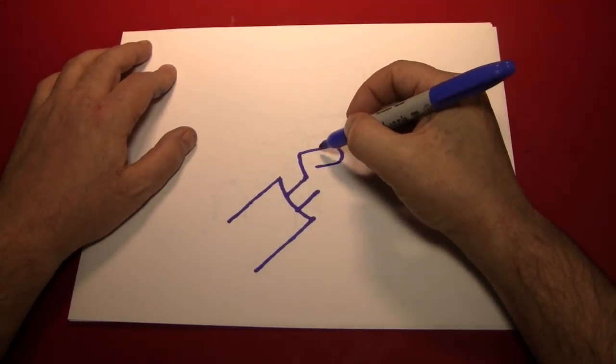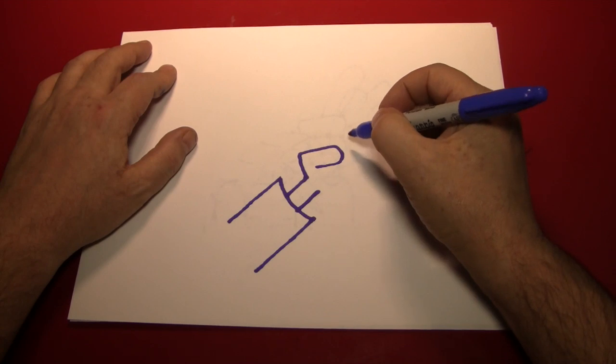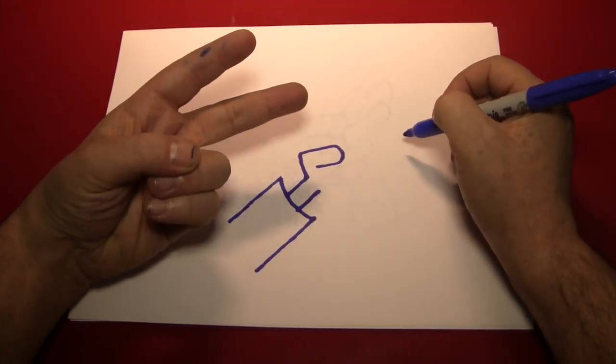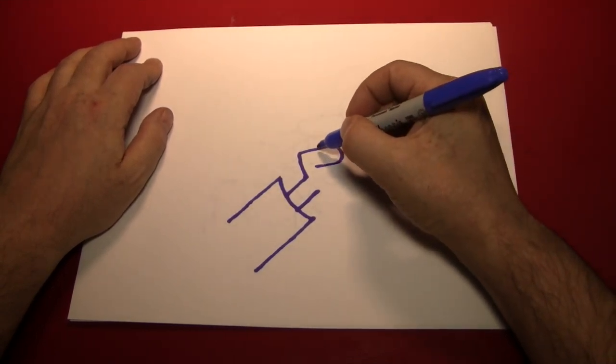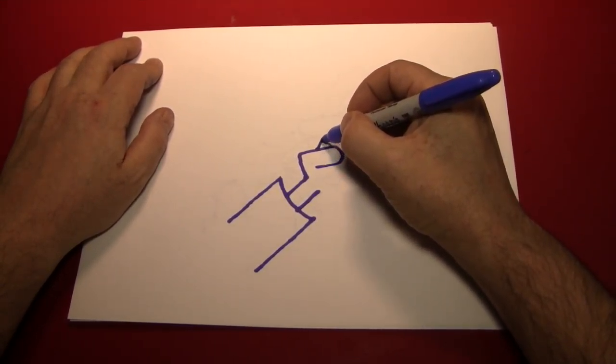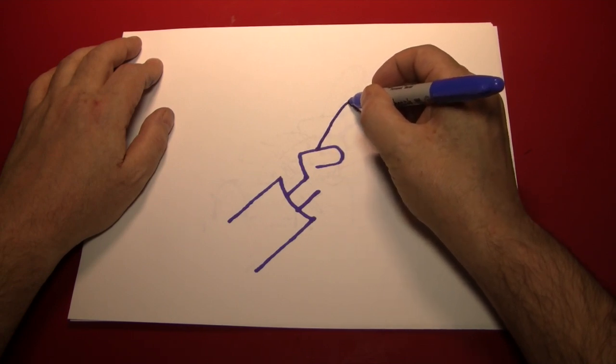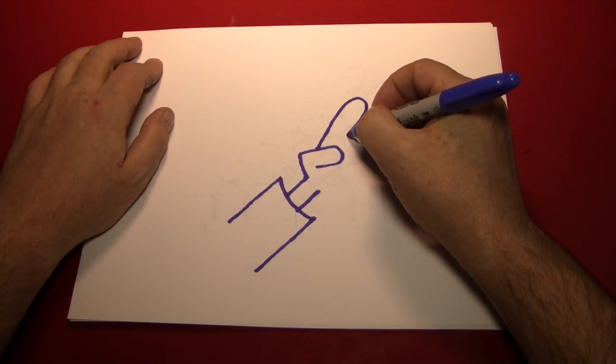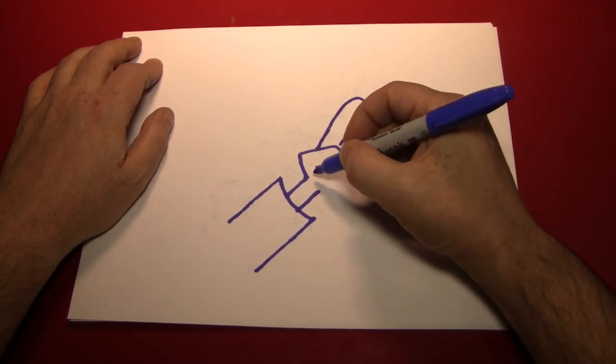And then the hand makes a V with these two fingers, the index and the middle finger. That's right, V for peace. So we'll start by drawing the index finger, which lines up with where the thumb bends, right there.